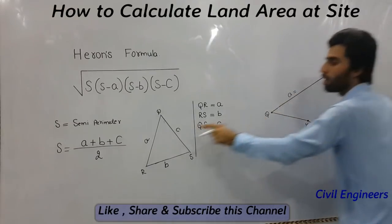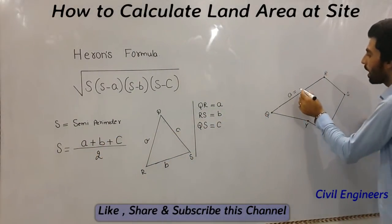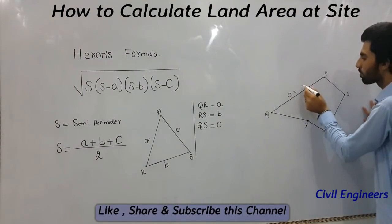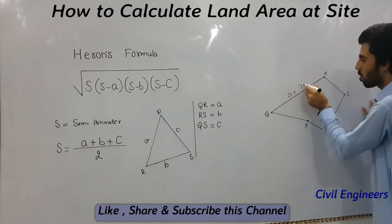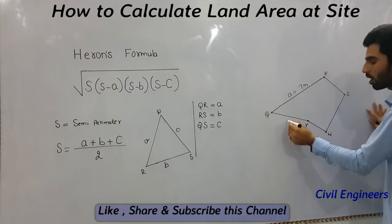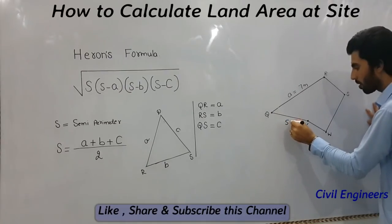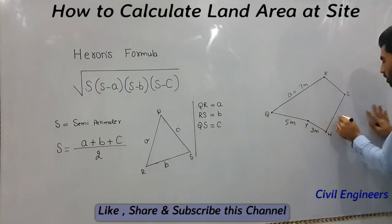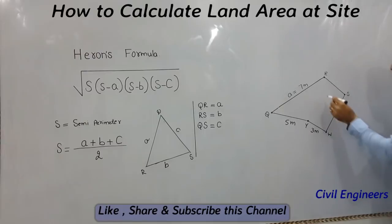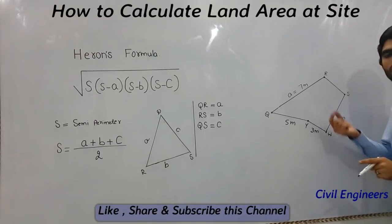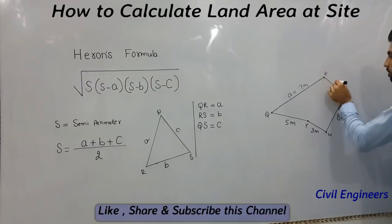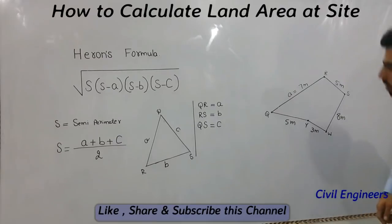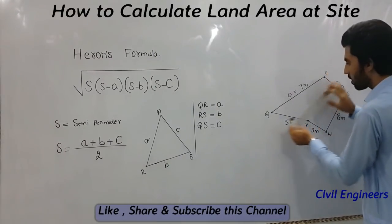QR becomes A, and we have sides A, B, and C. For example, this one is 7 meters, this one is 5 meters, this one is 3 meters, and this one becomes 8 meters. You find out all the dimensions of the traverse, and this one becomes 5 meters also. Now we will make more triangles inside this traverse.